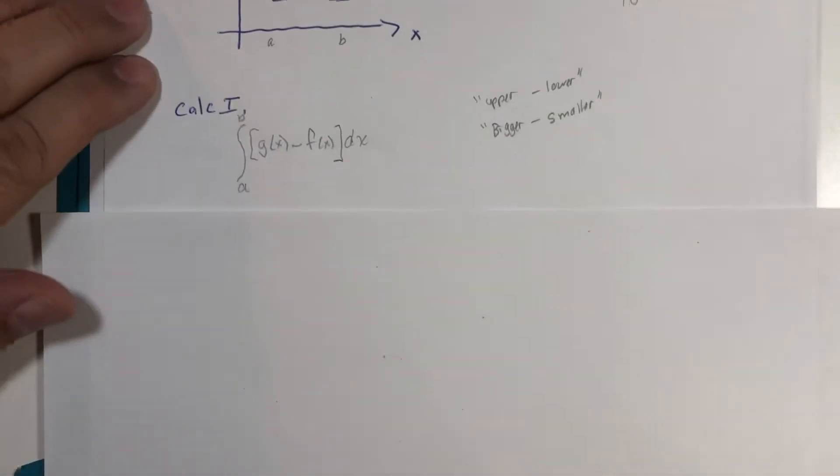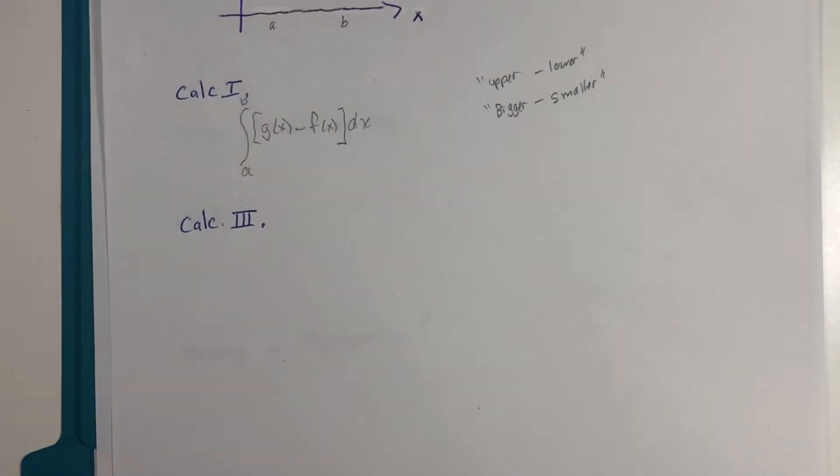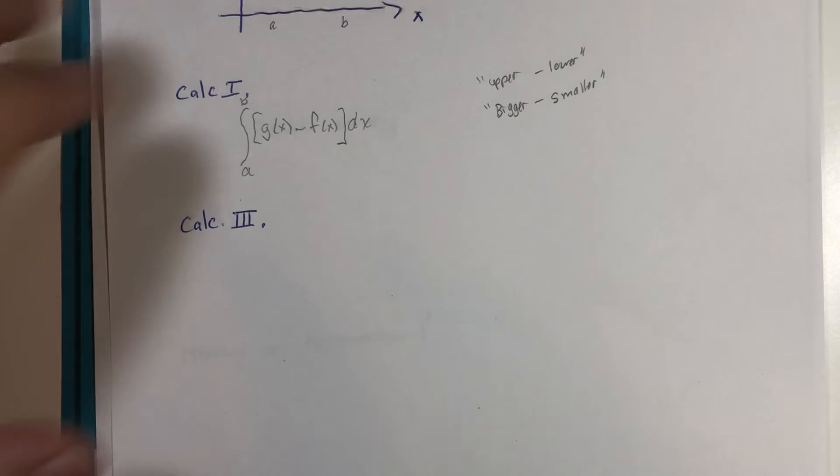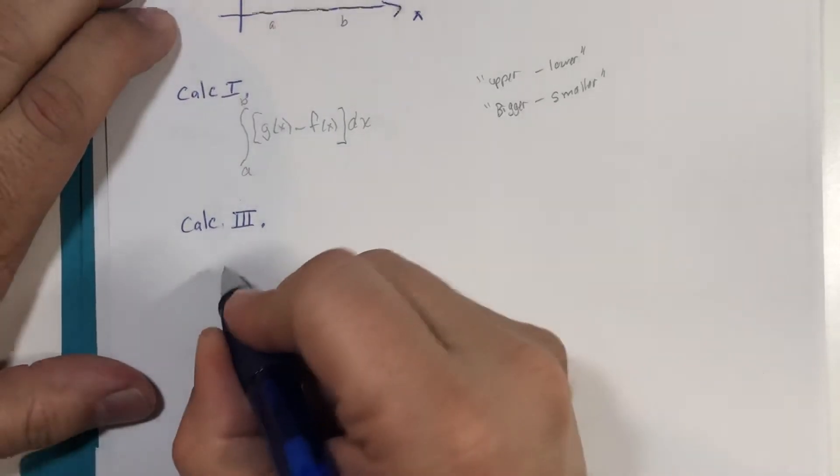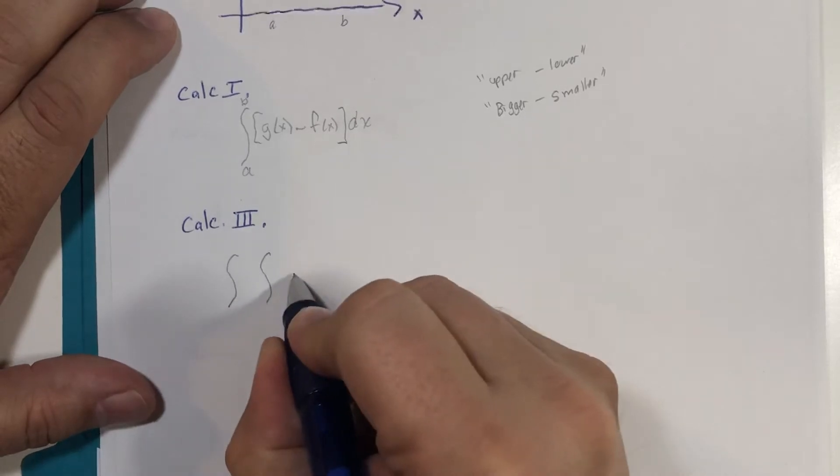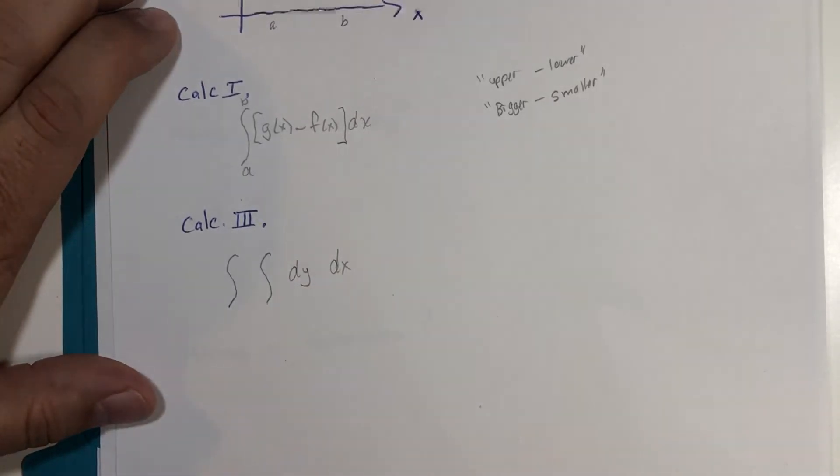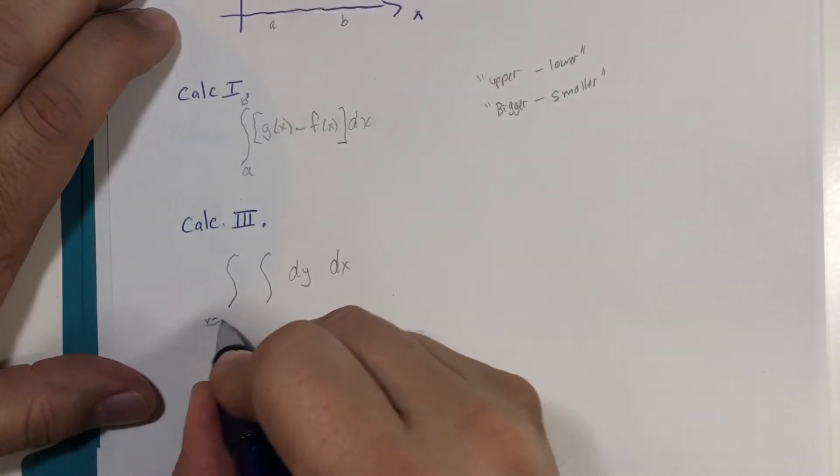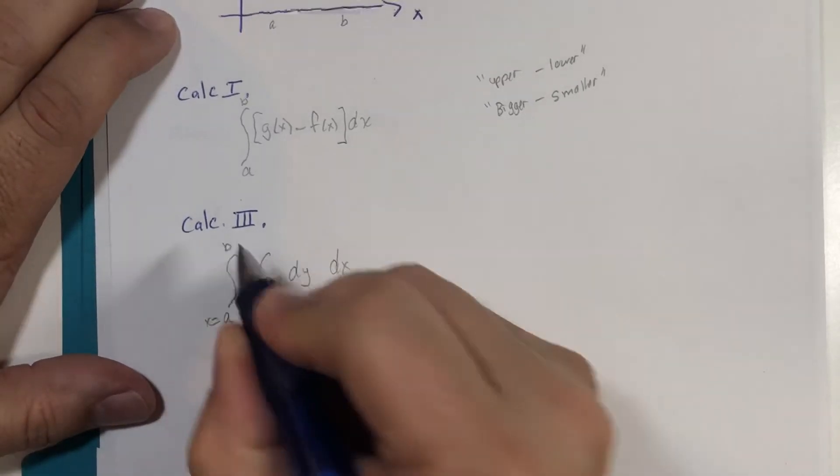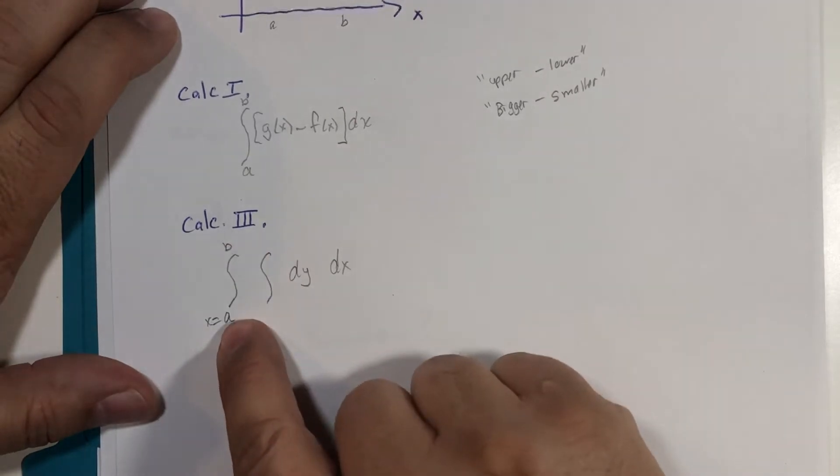Now here's how we're going to look at it in the multivariable calculus with the double integrals. We're going to view this as the x values are going from a to b, so that will be the bigger minus the smaller later on.